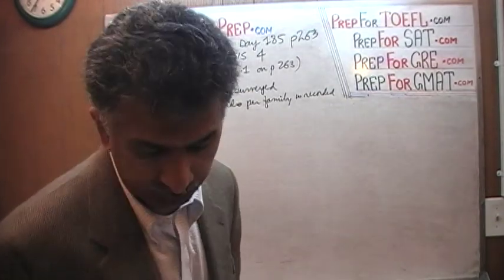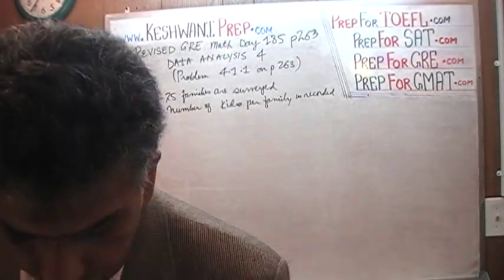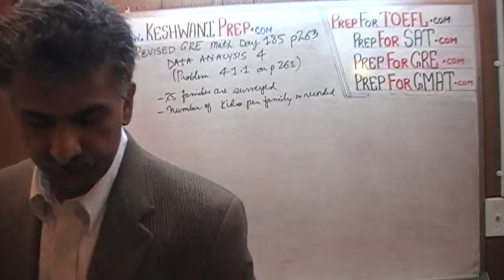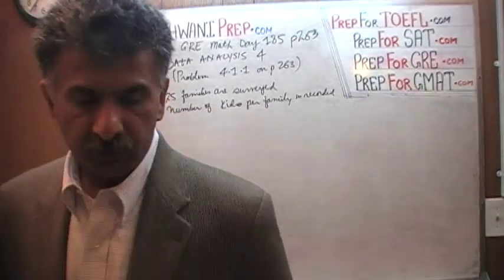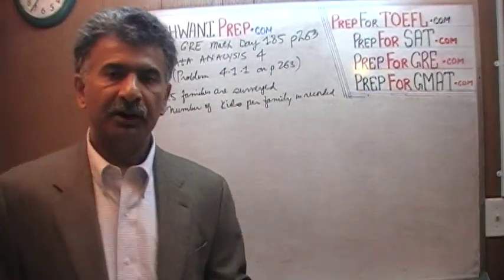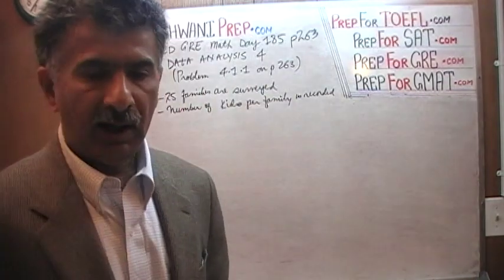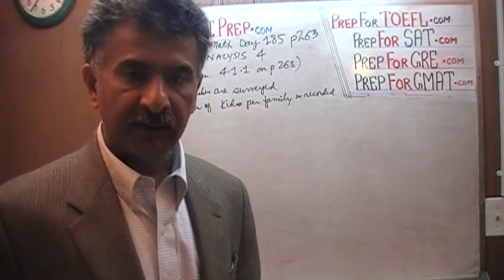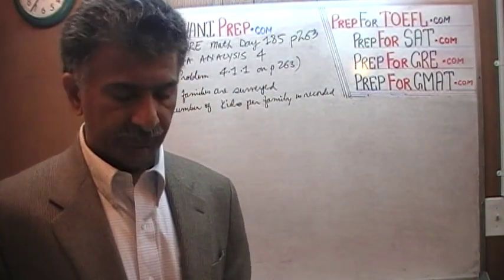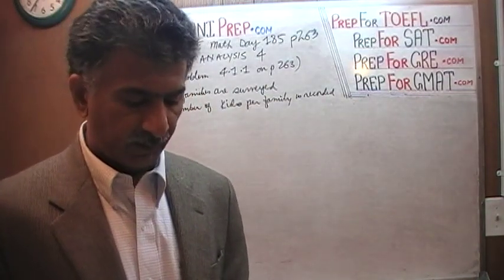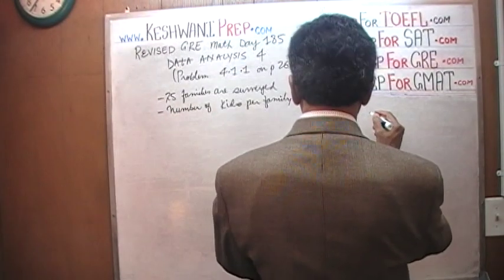At the very bottom of page 263, they give us 25 observations — 25 data points. They went around a particular town and surveyed 25 families, asking how many kids they had in the family. They made a record of it. These are the 25 observations.